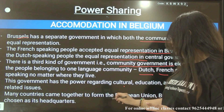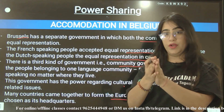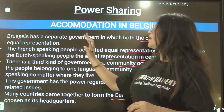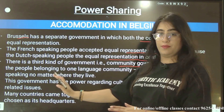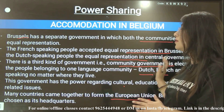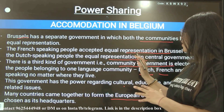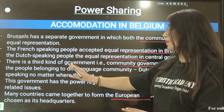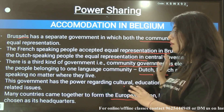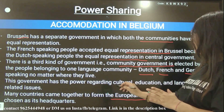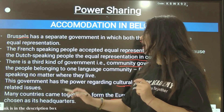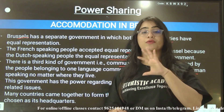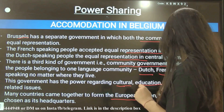Many countries together formed the European Union, and the European Union's headquarters was established in Brussels. Brussels has a separate government in which both communities have equal representation. The French speaking people accepted equal representation in Brussels because the Dutch speaking people have equal representation in the central government. The community government is elected by people belonging to one language community — Dutch, French and German speaking — no matter where they live, and it has power regarding cultural, education and language related issues. The European Union chose Brussels as its headquarters.